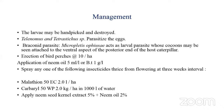For management, pick and destroy the larvae. Maintain natural enemies including egg parasitoids Telenomus and Trichogramma, and the braconid larval parasitoid Microplitis. When this braconid parasitoid emerges from the pest, cocoons can be observed on the ventral aspect of the posterior end of the ghost caterpillar. Install bird perches — 10 per hectare — and go for neem oil or Bacillus thuringiensis application.